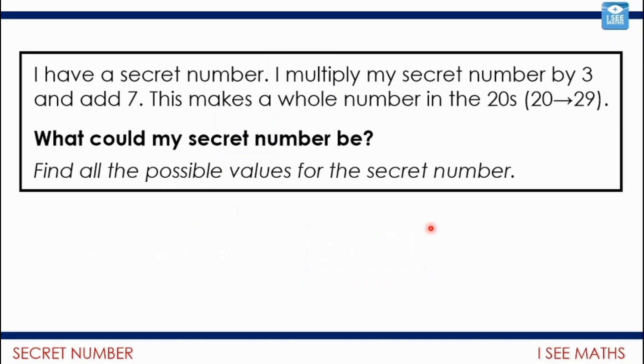And it looks a little bit like this. Well, it looks very like this, actually. I have a secret number. I multiply my secret number by 3 and I add 7. This makes a whole number in the 20s. What could my secret number be? Now, for this one, I want all possible values for the secret number. So, all of the possible secret numbers. Not just one. See if you can find every one that it could be. We'll have a look at them after this short pause.